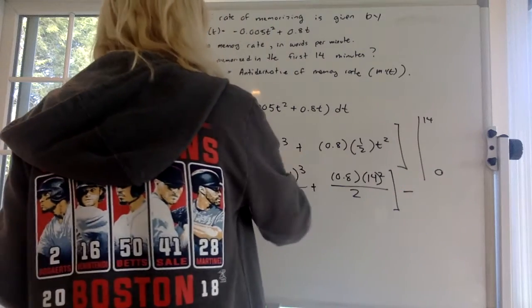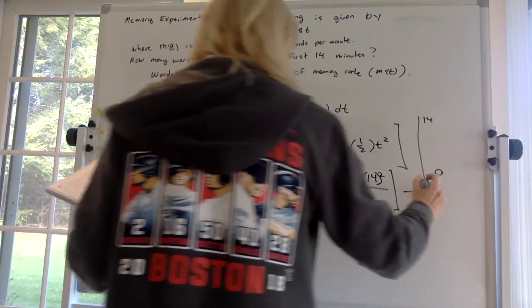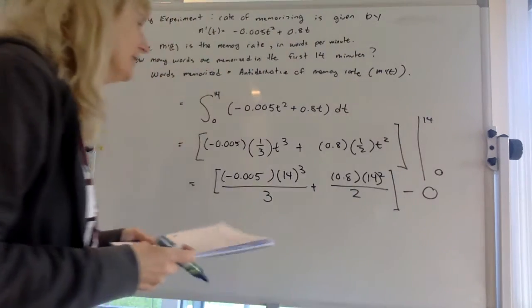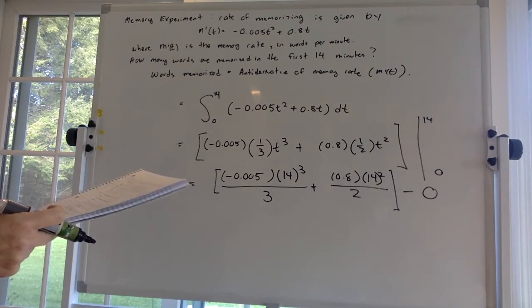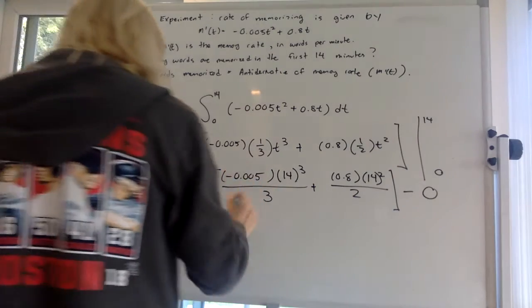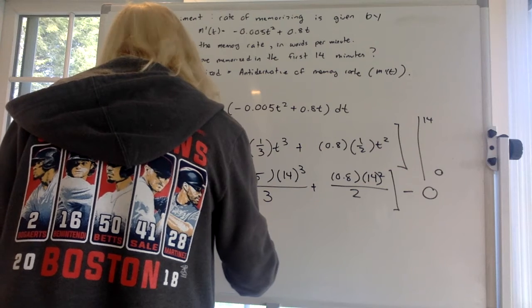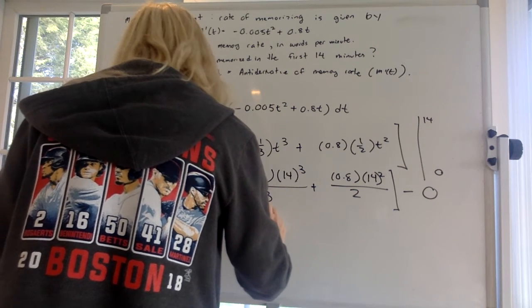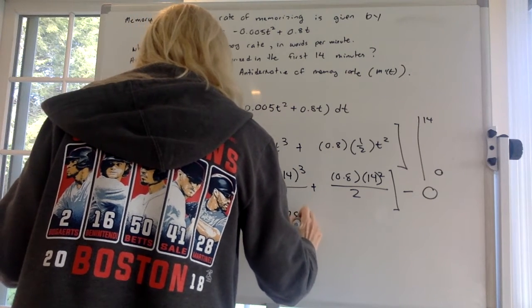Minus, and then if you see that if you plug in 0 to both of these terms, you're just going to get 0s, right? So I really don't have to worry about that. So now I just have to whip up my calculator and do these, and I got -4.57 plus 78.4.